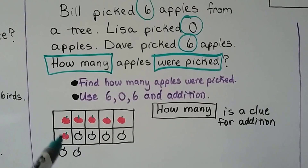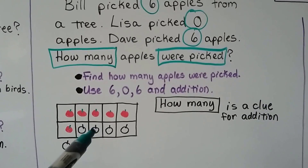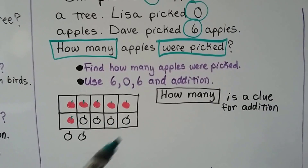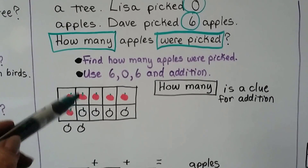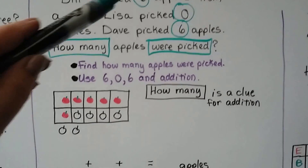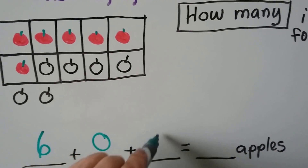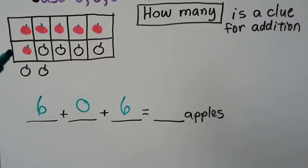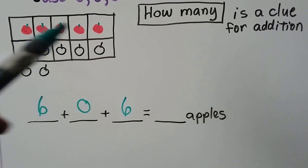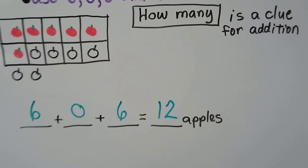We can make six apples for Bill's. Lisa is zero, so we put zero for Lisa. And Dave picked six. We can fill the ten frame with four of them and two are outside. Now we know there's ten, eleven, twelve. We can write an addition sentence with the six, the zero, and the six for our addends. We can use the pictures to help us count: six, seven, eight, nine, ten — we know that's a ten — eleven, twelve. Twelve apples were picked.